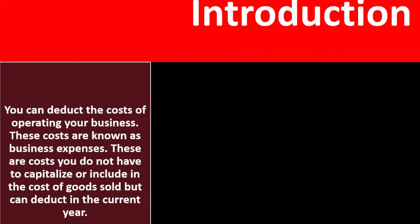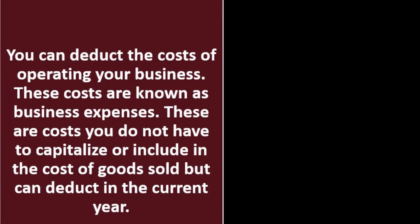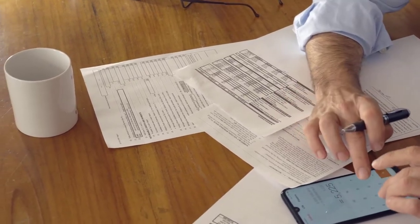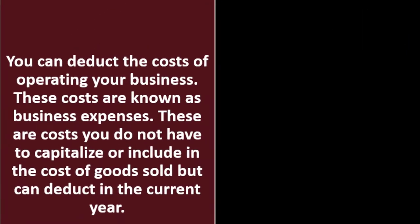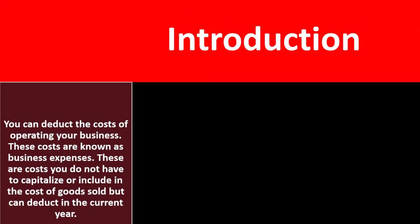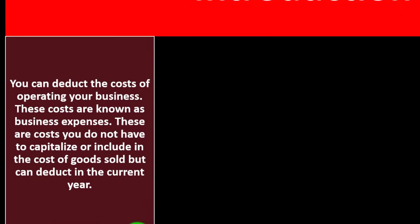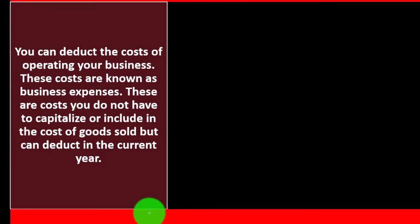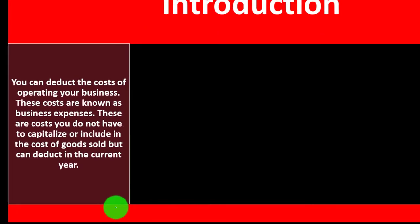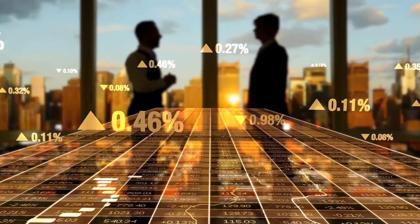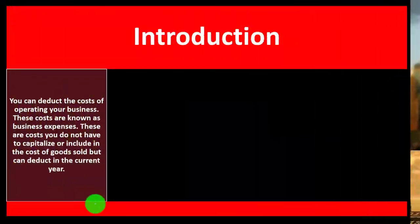Or include in the cost of goods sold. The cost of goods sold is kind of like an expense — it's going to be a good thing for taxes as well — but we go into special calculations related to the cost of goods sold. The point with the expenses is we want to deduct them in the current year, as opposed to capitalizing them and possibly getting a deduction in the future, possibly with something like a depreciation-type expense.